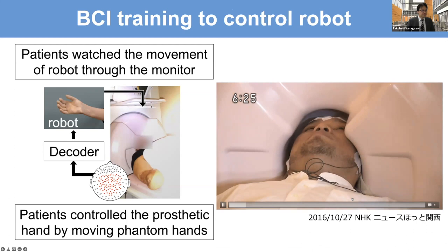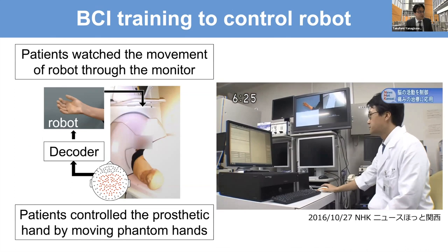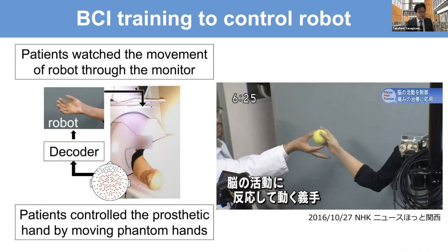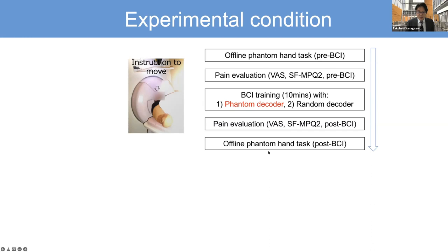We applied this BCI for patients to modulate cortical activity and pain. During training, the patient controlled the robotic hand freely by moving their phantom hand for 10 minutes and was instructed to improve accuracy. MEG signals during phantom hand movement were recorded and pain was evaluated by Visual Analog Scale — a 10-centimeter line where the right side represents highest pain and the left side represents no pain, and the patient marks their pain intensity.